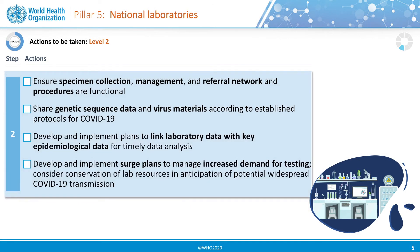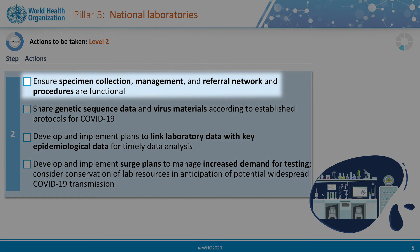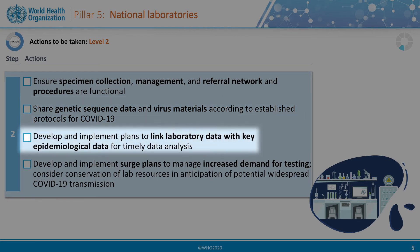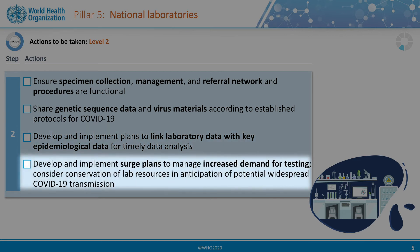In the second level, key actions include collecting specimens and shipping to laboratories in the referral network. We advise that all countries share genetic sequence data from the virus and other materials according to the laboratory terms of reference, which describes how laboratories should share information and materials. For timely data analysis, countries are advised to develop and implement plans to link laboratory data with key epidemiological data. In anticipation of potential widespread COVID-19 transmission, it is also important to develop and implement surge plans to manage increased demand for testing and consider conservation of lab resources. These surge plans should consider staffing, supplies, reagents, and resources required.